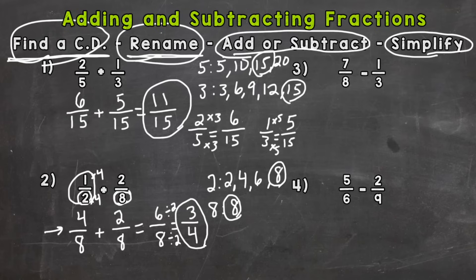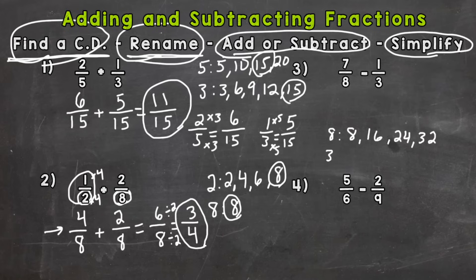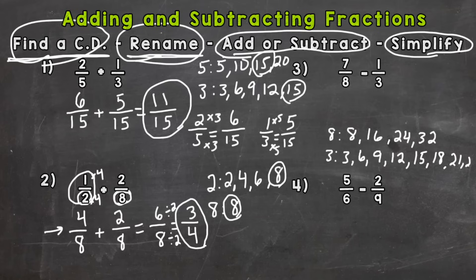Number three is a subtraction problem: seven eighths minus one third. We don't have a common denominator, so we need to find one. Listing multiples of eight: eight, sixteen, twenty-four, thirty-two. Multiples of three: three, six, nine, twelve — no match yet. I'll extend the threes since the eights are already at thirty-two: fifteen, eighteen, twenty-one, twenty-four. We have a match — our common denominator is twenty-four.